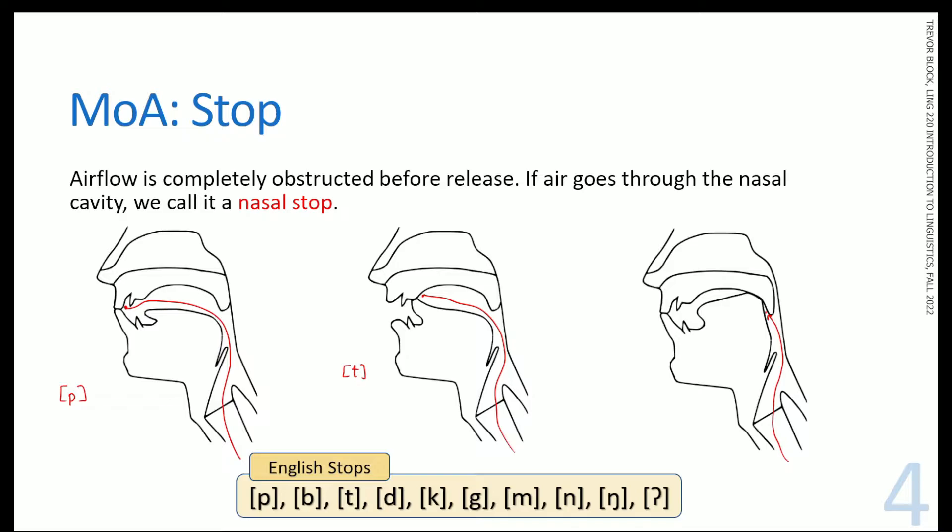So this is a velar stop, but this is a special type of velar stop because airflow is also going out of the nose. So even though airflow is getting out, stop refers to what's happening in the oral cavity. So this is a special type of stop called a nasal stop. If stops don't go through the nose, we just call them stops, but if they go out of the nose, we call them nasal stops.